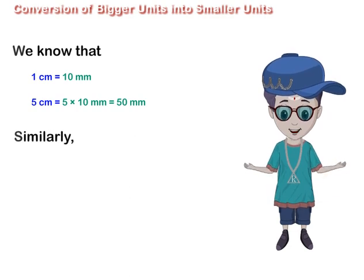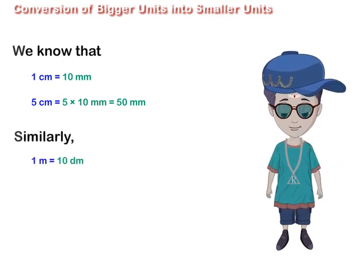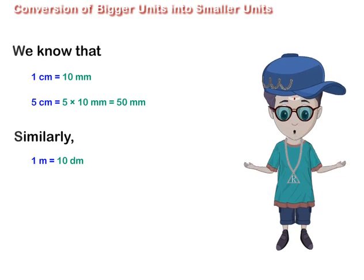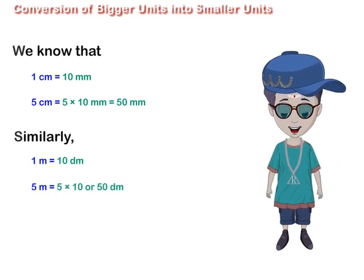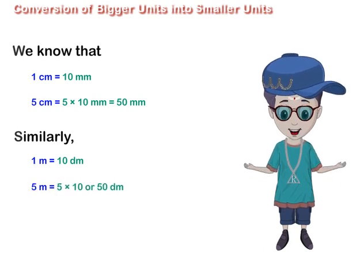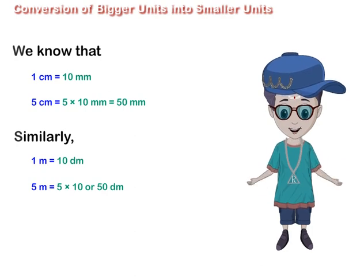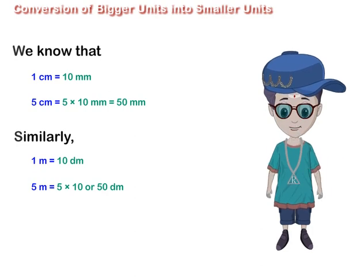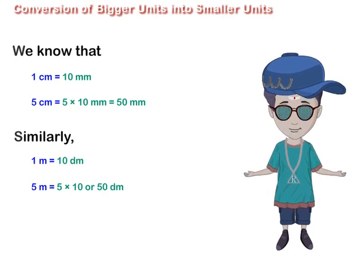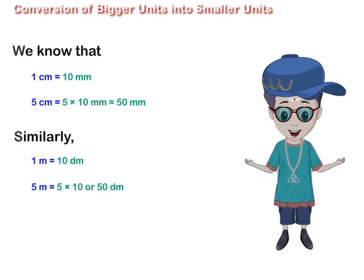Similarly, 1 m is equal to 10 decimeters. So, to convert 5 m into decimeters, we multiply 5 by 10 and get 50 decimeters.